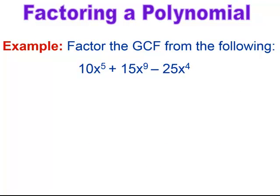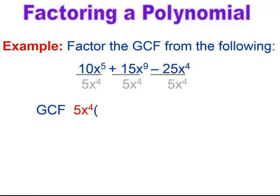Here's the example. For 10x⁵ + 15x⁹ − 25x⁴, the GCF we found was 5x⁴. Now factor it out of the polynomial. Write the GCF with an open parenthesis, then mentally divide each term by the GCF. 10x⁵ divided by 5x⁴ leaves 2x. The next term leaves +3x⁵. And the last term gives −5. Then close the parenthesis. That's how you factor the GCF out of a polynomial.